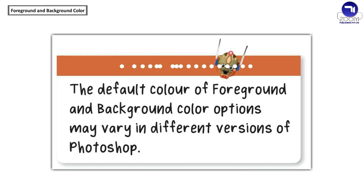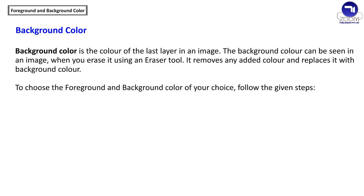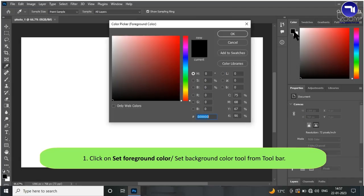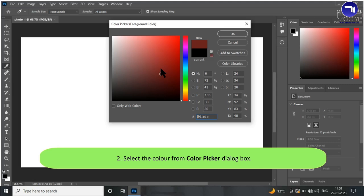The default color of foreground and background color options may vary in different versions of Photoshop. Background color is the color of the last layer in an image. The background color can be seen in an image when you erase it using an Eraser tool — it removes any added color and replaces it with the background color. To choose the foreground and background color of your choice, click on the Set Foreground Color or Set Background Color tool from the toolbar, then select the color from the Color Picker dialog box and click OK.